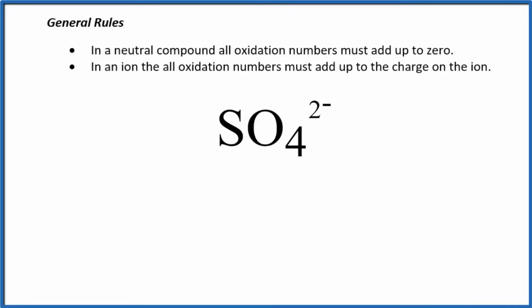An extension to the first rule is that when we have ions, this positive or negative charge after the compound, all of the oxidation numbers for the atoms in ions add up to the charge on the ion. So pause and try to find the oxidation number for each element in SO4 2-, the sulfate ion.